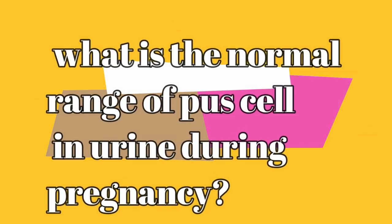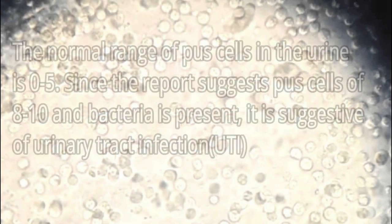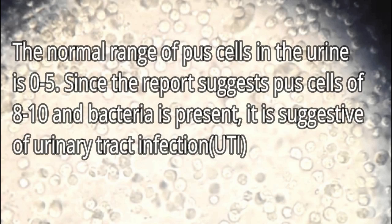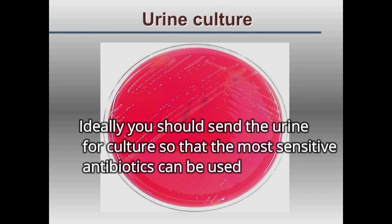What is the normal range of pus cells in urine during pregnancy? The normal range of pus cells in urine is 0 to 5. When the report shows pus cells of 8 to 10 and bacteria are present, it is suggestive of urinary tract infection.